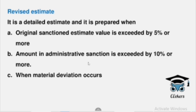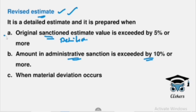Next, we use a Detailed Estimate for the Revised Estimate. We do not always prepare a Revised Estimate. The first condition requiring a Revised Estimate is when the original sanctioned estimate value is exceeded by 5% or more. If the cost or expenditure exceeds the detailed estimate by 5% or more, we prepare the Revised Estimate.